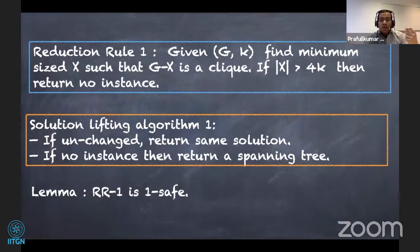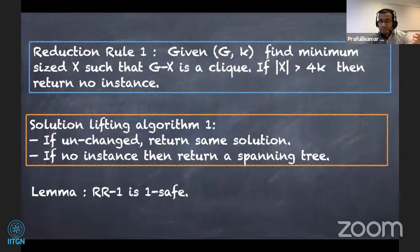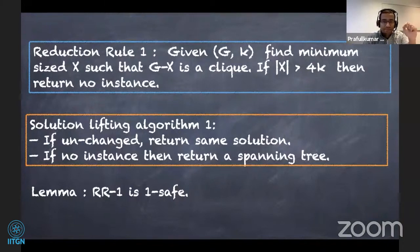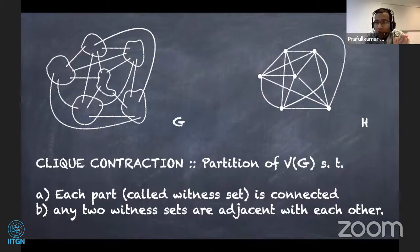In the normal setting it would have been sufficient to just present this reduction rule, but since we are dealing with a lossy kernel, I should also specify a solution lifting algorithm accompanying this first reduction rule. The solution lifting algorithm works like this: if our reduction does not change an instance, just return the same solution; if reduction rule one determines our instance is a no-instance, return any spanning tree. It's easy to see that reduction rule one is 1-safe.